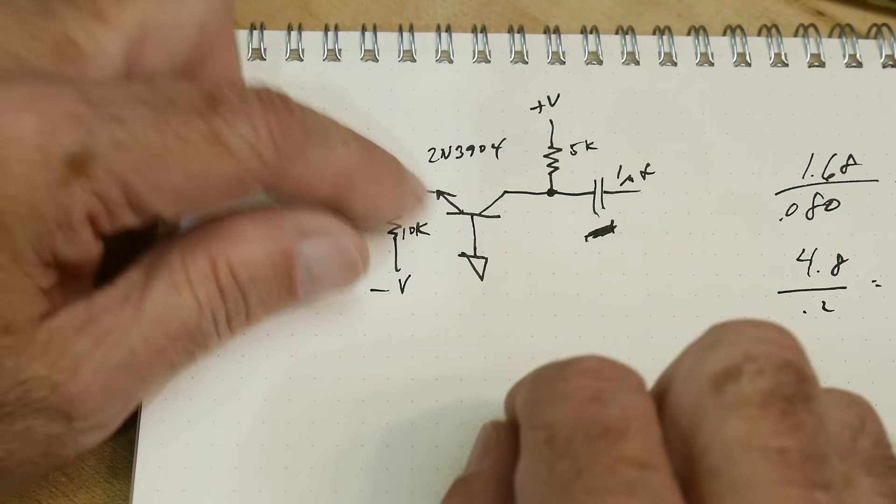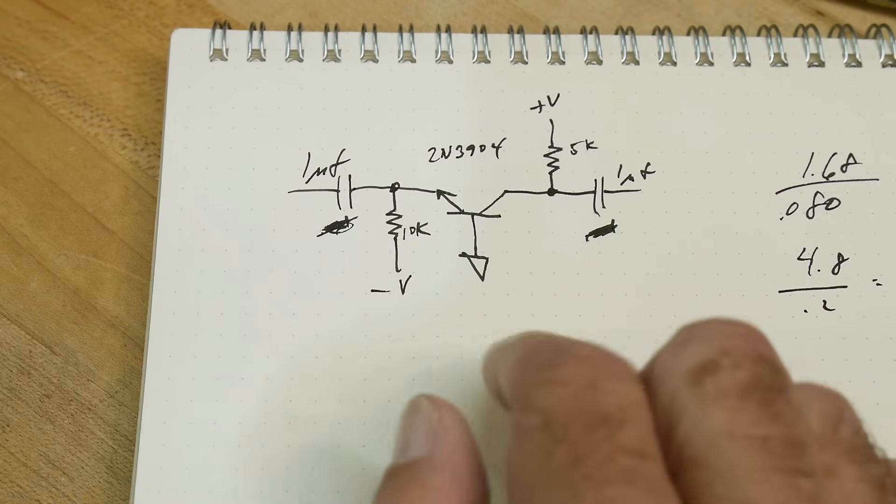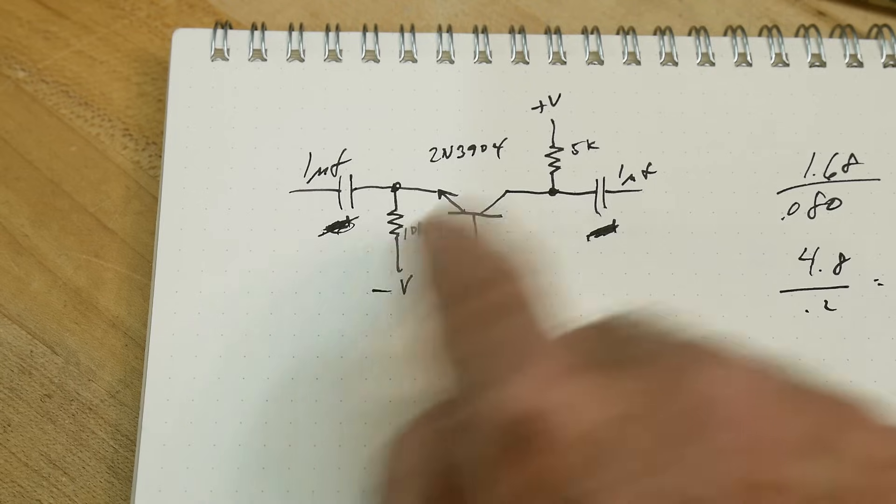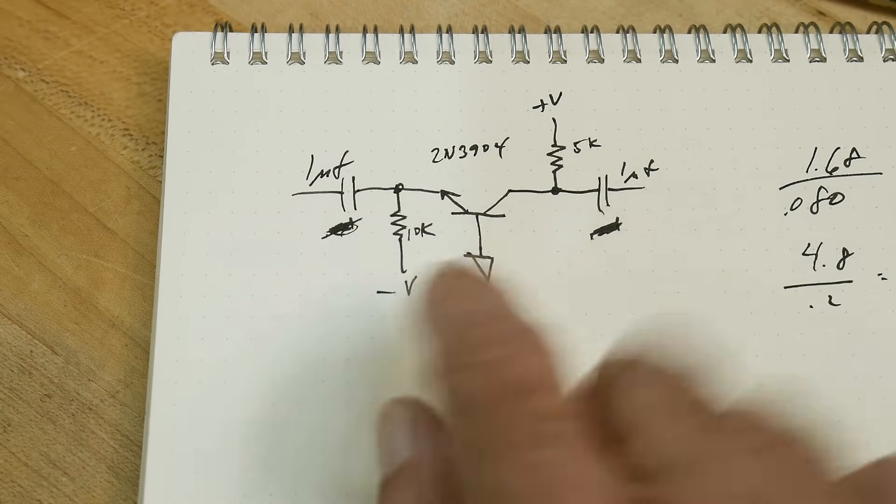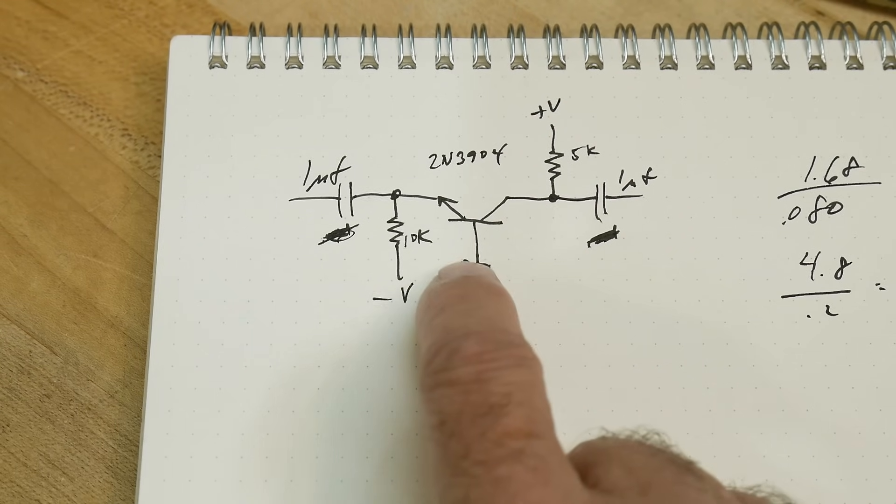If you look at a common emitter, it's the emitter that's the common between the two of them. It's kind of strange - the way that I have it drawn, it needs a plus voltage and a minus voltage because I'm referring it to ground.